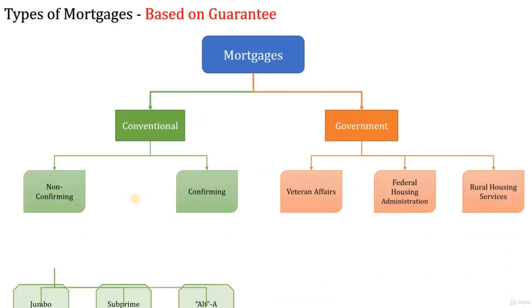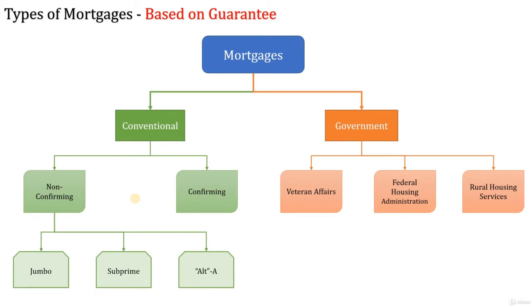Let's learn about the different types of mortgages based on the guarantee. The first category is government loans and conventional loans. In conventional loans you would see non-conforming and conforming. In government loans you would see Veteran Affairs, Federal Housing Administration, and Rural Housing Services. In non-conforming conventional loans you have jumbo loans, subprime loans, and Alternative-A loans.